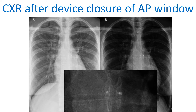It is easy to miss the device on the routine chest X-ray unless one is aware of its presence. The radiopaque markers are barely visible; close scrutiny near the markers makes the presence of the disc of the device more evident. On a film, it will be better seen if it is a penetrated view.